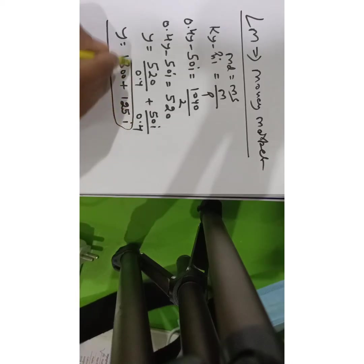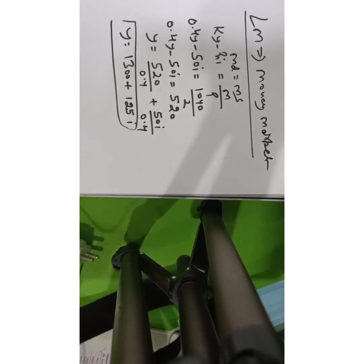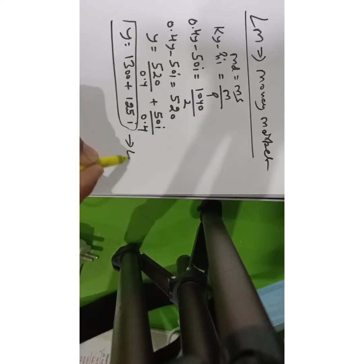Solving this further, what I get is Y equals 1300 plus 125i. This is the LM equation, again solved in terms of Y.